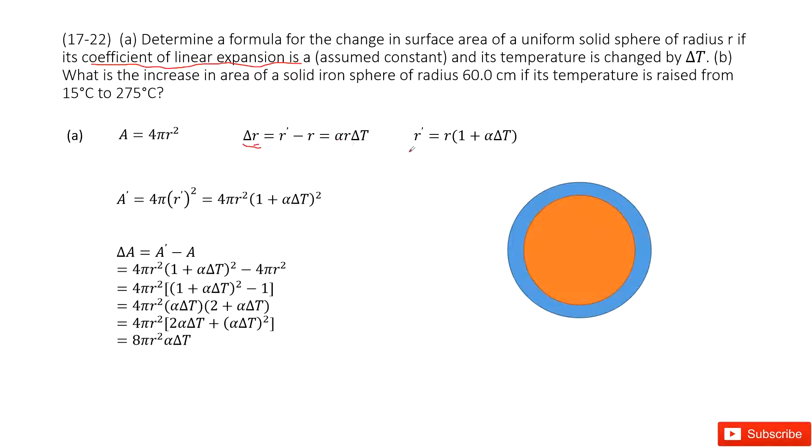From this equation, we can write the function for r'. Now let's write the surface for the uniform solid sphere with the new radius r' as 4π(r')².